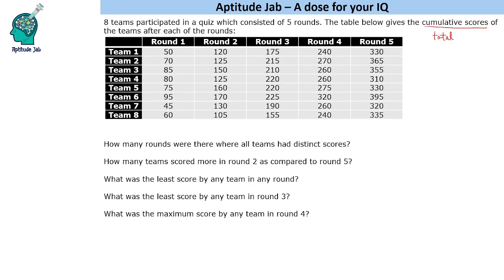How to read this data: in round 1 a team has a score of 50, and in round 2 it becomes 120, so 120 is the total score after round 2. This is the total score after round 3, round 4, and round 5. So if you have to find how much they scored in round 2, subtract: 120 minus 50 gives you 70. Round 3: 175 minus 120 gives 55. Round 4: 240 minus 175 gives 65, and round 5 gives 90.